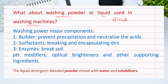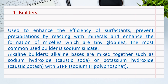The washing powder can be manufactured using three processes, the most common being the blender process. The first step is to mix washing powder components together. The major components include builders, which are used to enhance the efficiency of surfactants, prevent precipitation by reaction with minerals, and enhance the formation of micelles — tiny globules. The most common builder is sodium silicate.